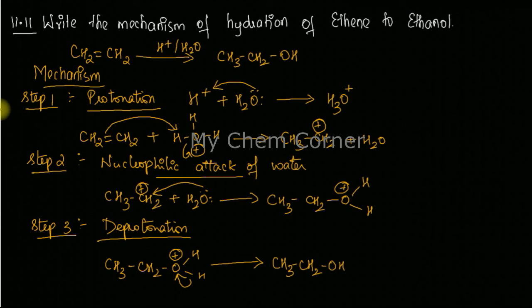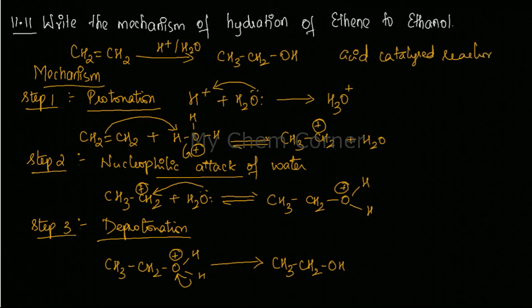Just one single thing: these steps here have a reversible reaction. Now this is also called as an acid catalyzed reaction because hydrogen is used here, H+ is used in the first step and is getting eliminated here in the last step. So that means H+ is acting as a catalyst. Therefore this is an acid catalyzed reaction of ethene to ethanol.